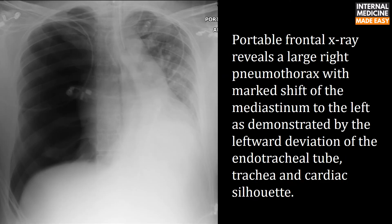This portable frontal X-ray reveals a large right pneumothorax with marked shift of the mediastinum to the left, as demonstrated by leftward deviation of the endotracheal tube, trachea, and cardiac silhouette. The green arrow shows the deviation of the endotracheal tube and trachea; the pink arrow shows the deviation of the cardiac silhouette.